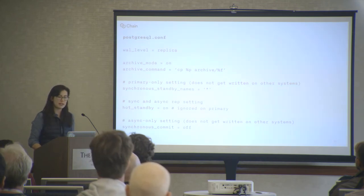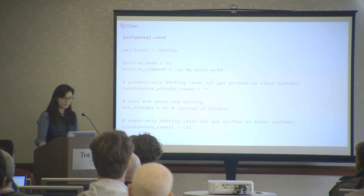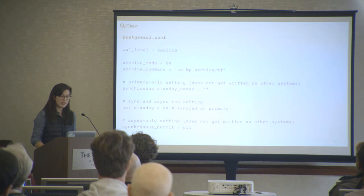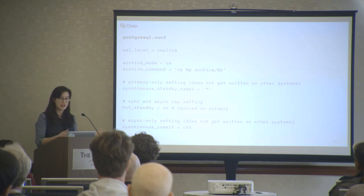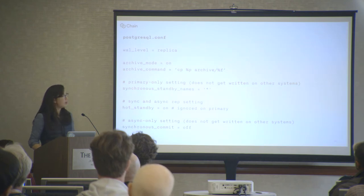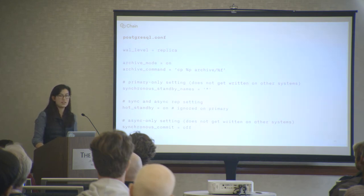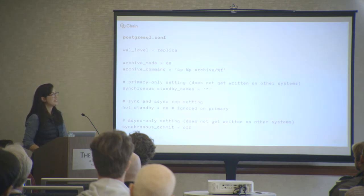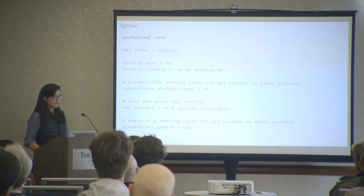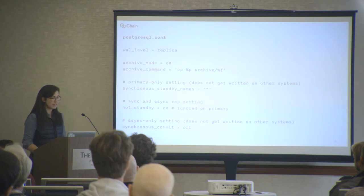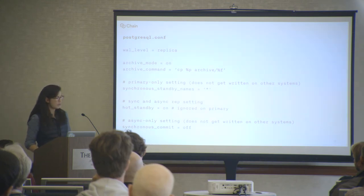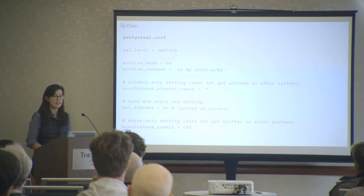Streaming replication works by shipping and applying write-ahead log records from one peer to another. The very first thing we tweak is the WAL level. This setting determines just how much information is written to the WAL. By default, Postgres writes just enough data to the WAL to recover from a crash. But this isn't sufficient for streaming replication, so we set the WAL level to 'replica', which logs the extra information necessary to synchronously replicate, as well as to run read-only queries on a standby server. We also need to set up WAL archiving, which we can do by setting archive mode to 'on' and then choosing an archive command, which is platform-specific. This simple command copies all archivable WAL segments to an archive folder inside Postgres's data directory.